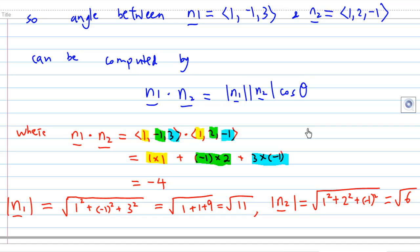Then we find the length of n1, which is square root of 1 squared plus minus 1 squared plus 3 squared. That equals square root of 11. And the length of n2 is 1 squared plus 2 squared plus minus 1 squared, which equals square root of 6.